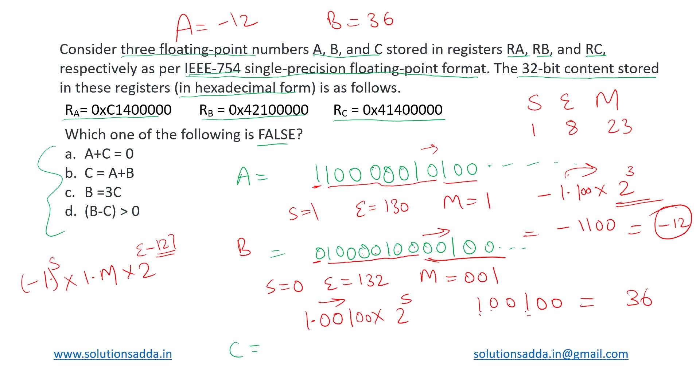Now let us evaluate C. It will be 41400000, so 0100, 0001, 0100, followed by all the zeros. So here again the sign bit is 0. Exponent is 1, 2, 3, 4, 5, 6, 7, and 8. Exponent is 128 plus 2, which is 130.